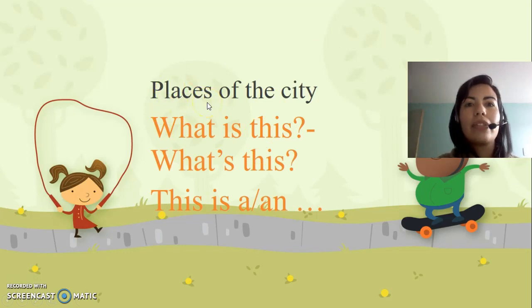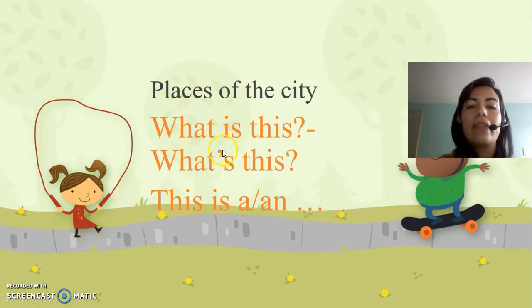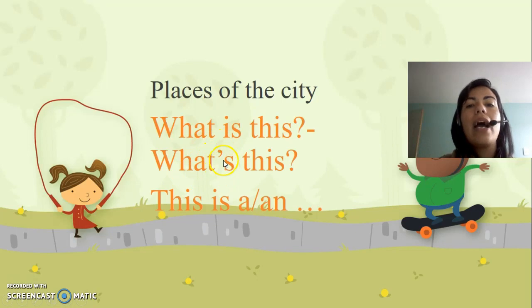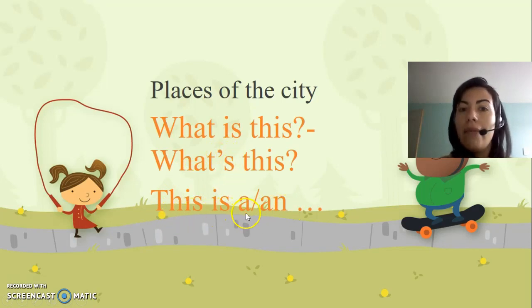Let's get into the topic — Places of the city, los lugares de la ciudad. Today we look at the question 'What is this?' which means '¿Qué es esto?' The full form and the contracted form are the same question; the only difference is the apostrophe, which erases the I. The answer is 'This is a' or 'This is an.' Vamos a mirar cómo funciona para hablar de los lugares de la ciudad.